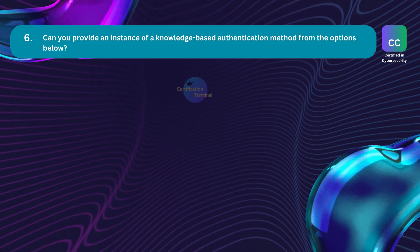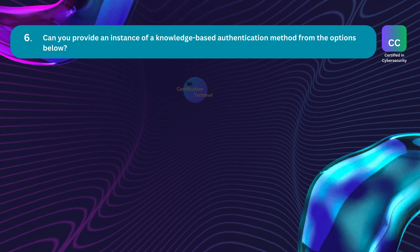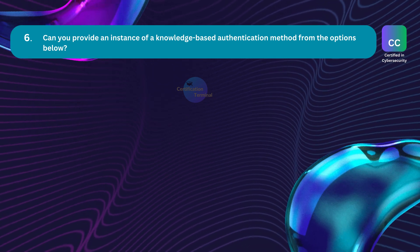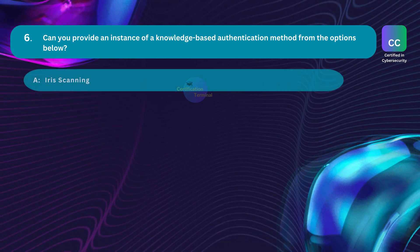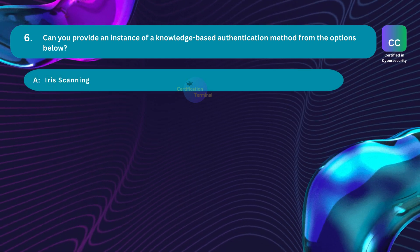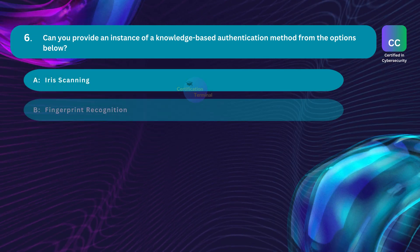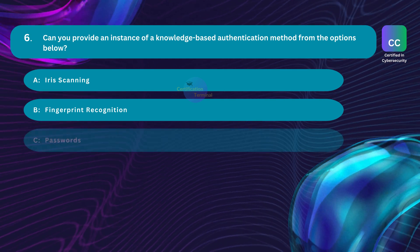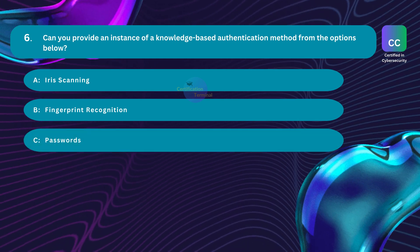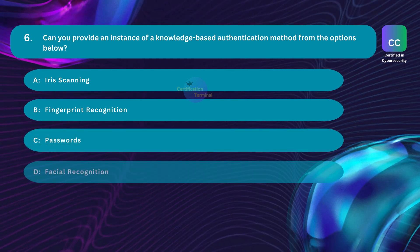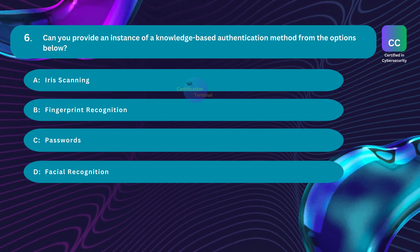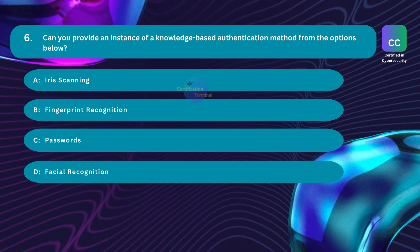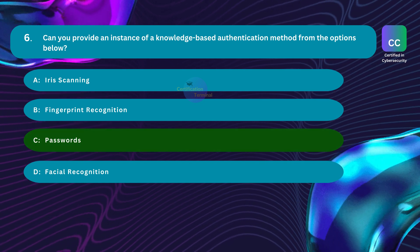Question number six: Can you provide an instance of a knowledge-based authentication method from the options below? Option A: iris scanning. Option B: fingerprint recognition. Option C: passwords. Option D: facial recognition. The correct answer is Option C — passwords.